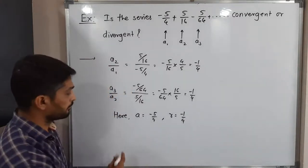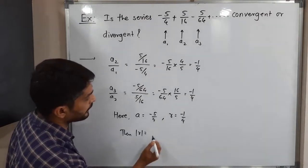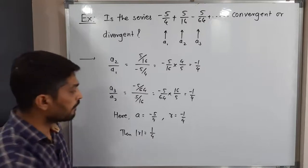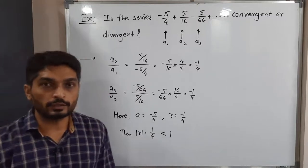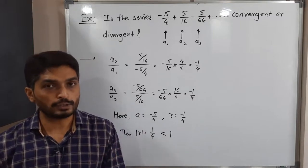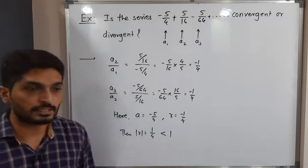Let us find the value of mod R. If you apply mod to it, the minus sign will get cancelled and we will have simply 1 by 4. Obviously, it is less than 1. In the previous video, we have already seen if we have a geometric series with mod of common ratio less than 1, then we say the geometric series is convergent.